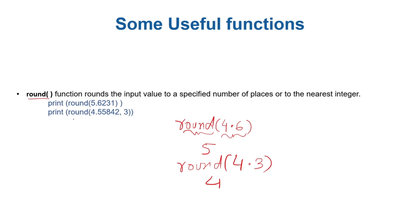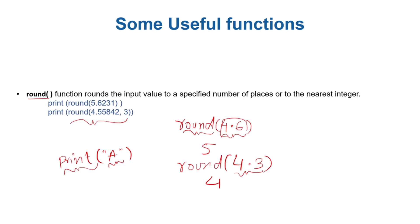Another use of round is when you give it a second argument. When you write print with argument 'a', that 'a' is called an argument to the function. Similarly, round is a function and 4.6 or 4.3 is an argument. We will see functions in detail and write our own functions later on, but for now just know that this particular function accepts two arguments.